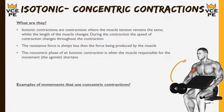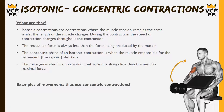Looking at the concentric phase of an isotonic contraction: it's when the muscle responsible for the movement — the agonist — shortens. Looking at the picture, the bicep is colored red as the agonist or prime mover. To move the weight, the bicep needs to shorten during the contraction, making it a concentric contraction. The force generated in a concentric contraction is always less than the muscle's maximal force, so the muscle is never working at 100%. There is a sticking point — the weakest position — and the contraction just needs to be strong enough to get past that point.